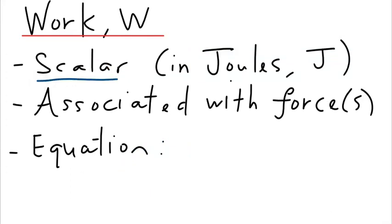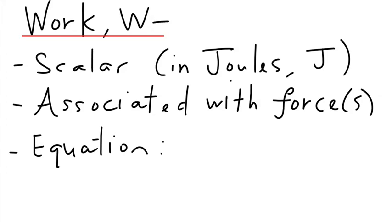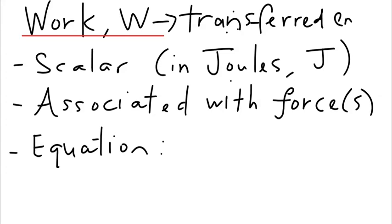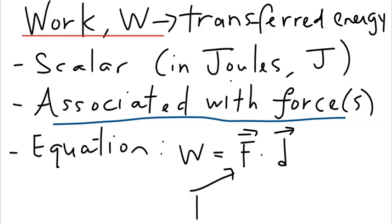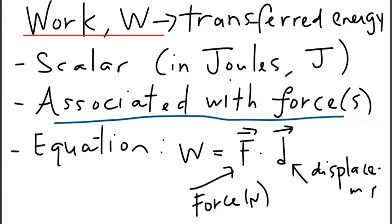Next, let's look at the concept of work. Work is a scalar quantity measured in joules — the same units as energy. Work can be considered as transferred energy. W is energy transferred to or from an object by means of a force acting on it. The equation defining work is the dot product of two vectors: the force vector F (in newtons) and the displacement vector d (in meters).